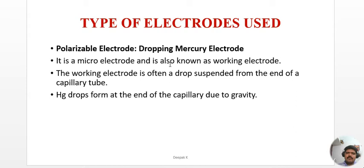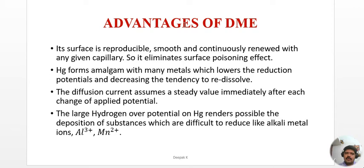The dropping mercury electrode is the working microelectrode — mercury drops form at the end of the capillary due to gravity. Advantages include: its surface is reproducible, smooth, and continuously renewed, eliminating any surface poisoning effect. Mercury forms amalgams with many metals, lowering the reduction potential. The diffusion current assumes a steady value immediately after each change of applied potential. The large hydrogen overpotential on mercury allows deposition of substances difficult to reduce, like alkali metals, Al³⁺, and Mn²⁺.